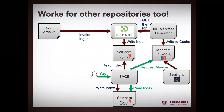It also works for other repositories. SAF archives go straight into DSpace, and our IIIF manifest generator can also read DSpace RDF through DSpace's RDF web app.